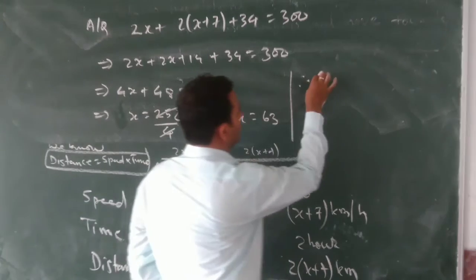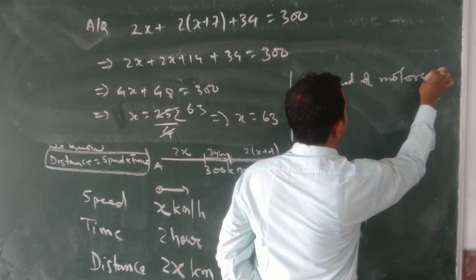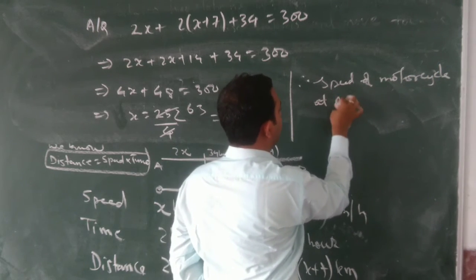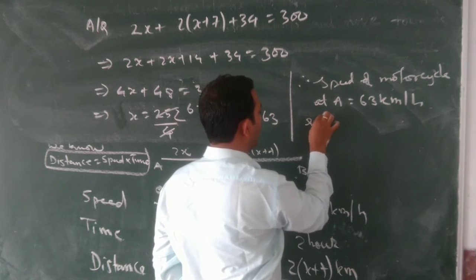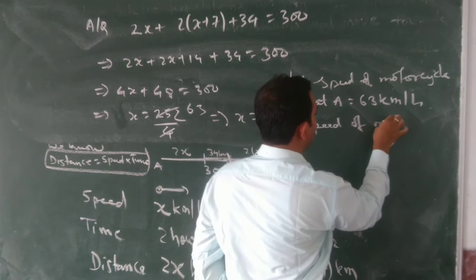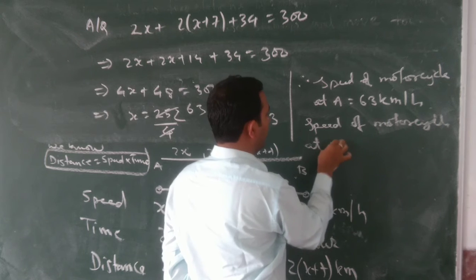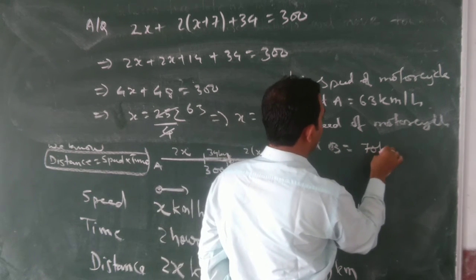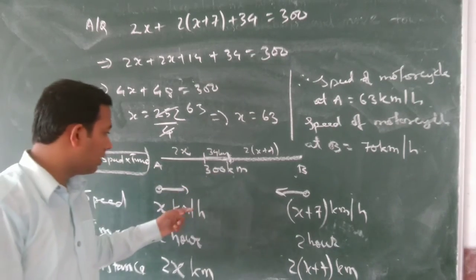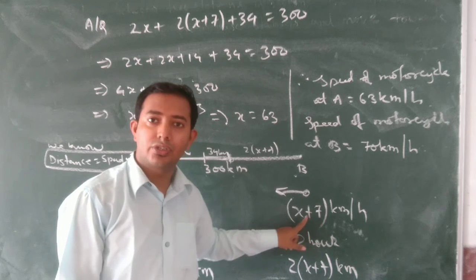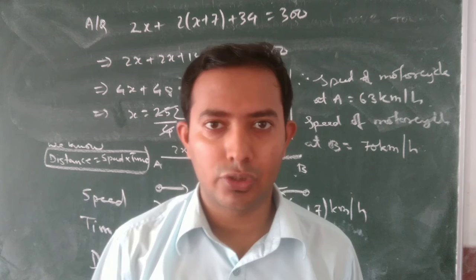So the speed of the motorcycle at A equals 63 km per hour, and the speed of the motorcycle at B equals x plus 7, which is 63 plus 7 equals 70 km per hour. I hope you understood. Thank you.